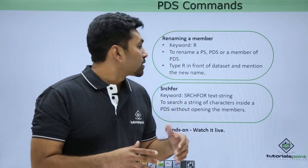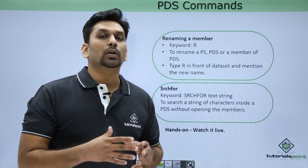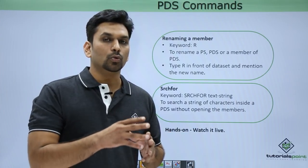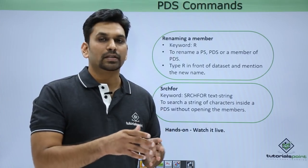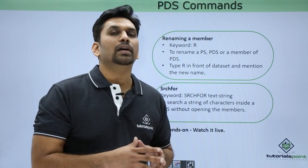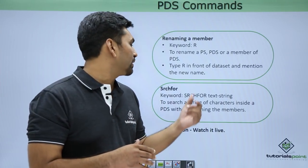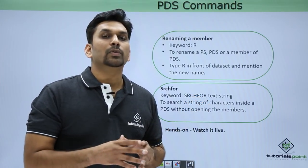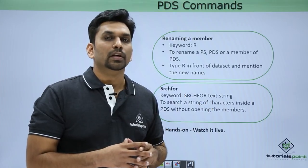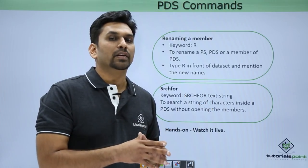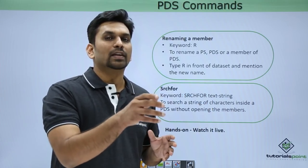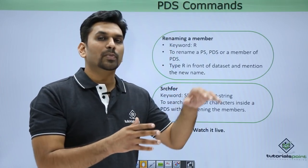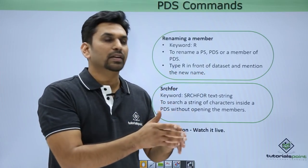Next is search for. If you want to search for a particular string in any of the members present in a PDS, one way is to open all the members and search using the F command. Another way is to open the PDS in the command line, write SRCHFOR followed by the text string, and hit enter. It will start searching in all the members. Wherever it finds that text string, it will display 'found' in the star mark fields on the right-hand side.